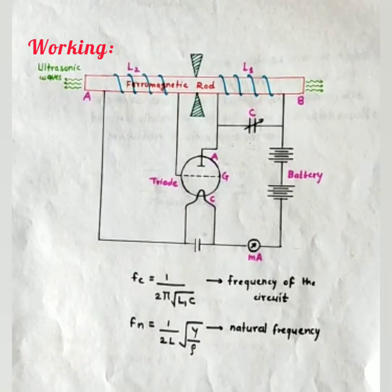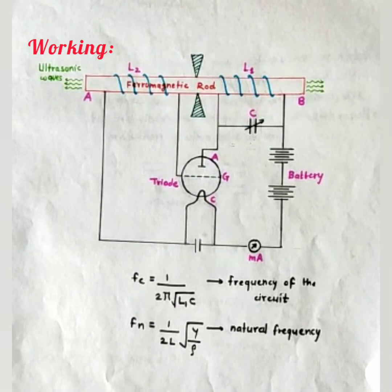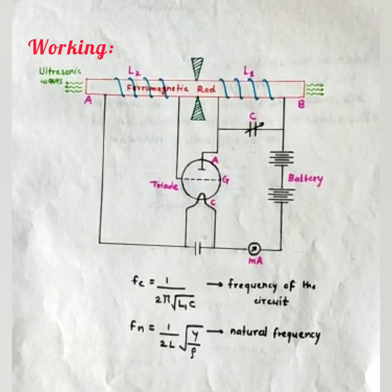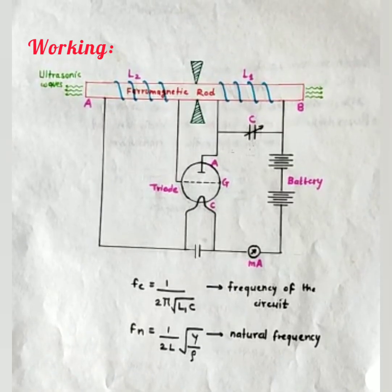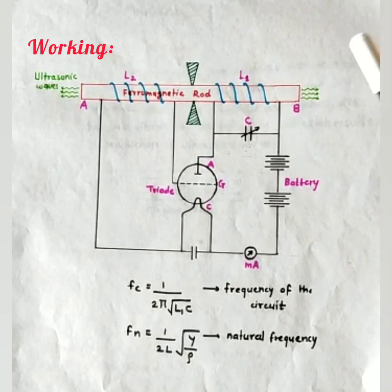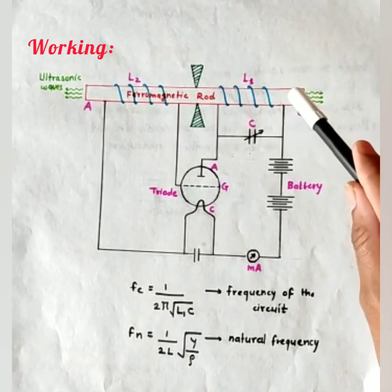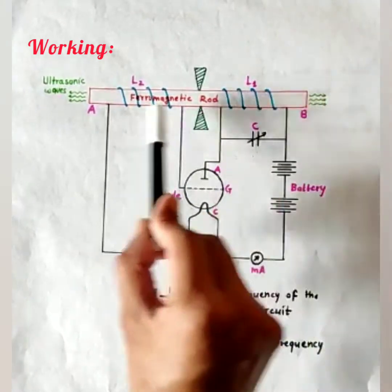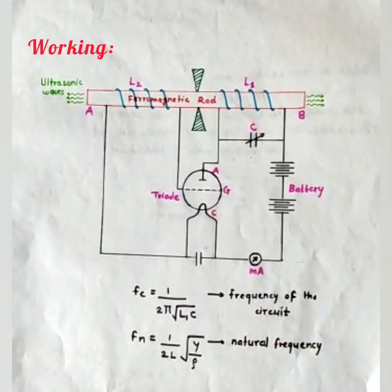The rod will vibrate with its maximum frequency. This condition when Fn equals to Fc is known as resonance. And once this condition of resonance is achieved, the ferromagnetic rod vibrates with its maximum frequency and hence, ultrasonic waves are emitted from the two ends of the magnetic rod.